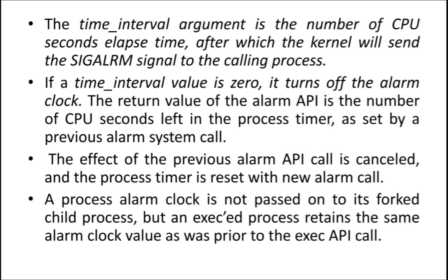The time interval argument is the number of CPU seconds elapsed time after which the kernel will send the signal or alarm signal to the calling process. The time interval argument stores the number of seconds that has to be elapsed — for example, one minute means 60 seconds, two minutes means 120 seconds. After that particular amount of time is elapsed, it is going to send the signal to the calling process to wake up, by sending the SIGALARM signal. SIGALARM means signal alarm — it will send that signal to the process to wake up.